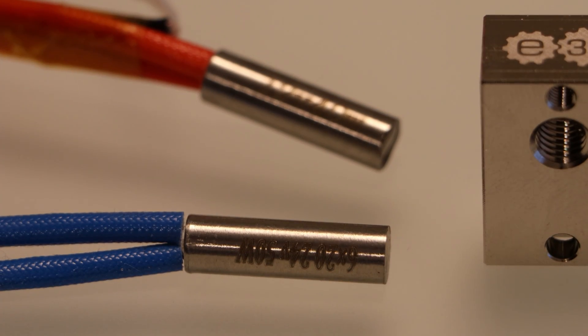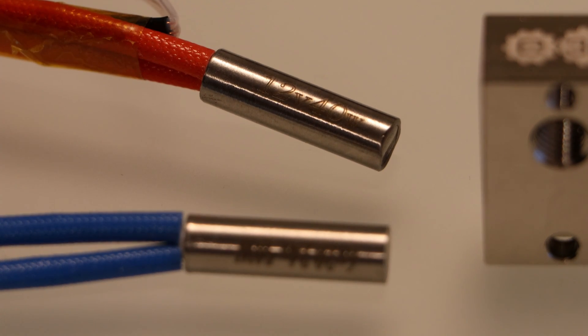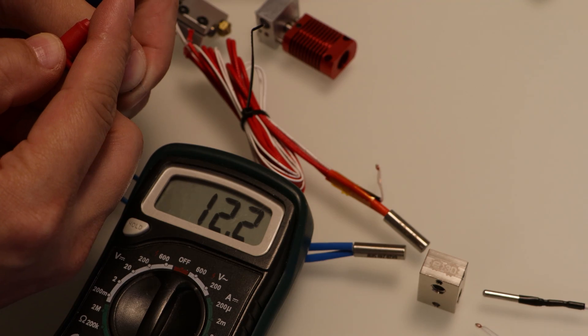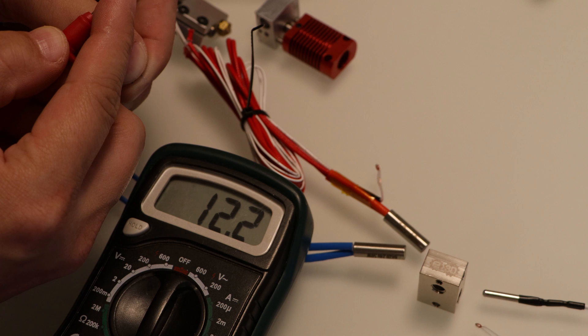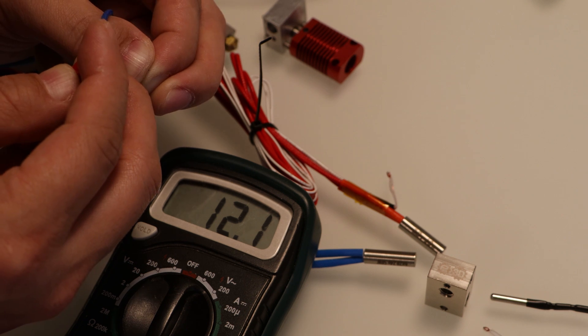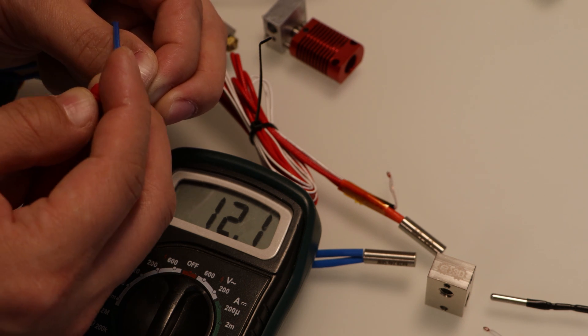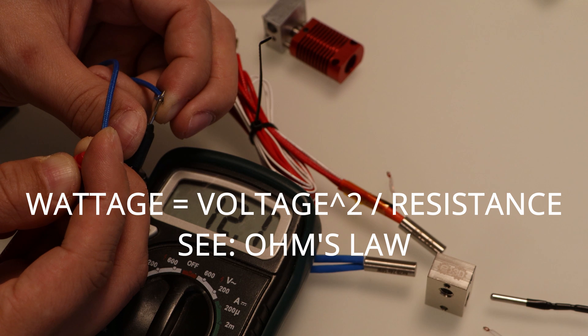Heater cartridges are usually described by a voltage rating and a power rating. These ones are nicely marked, so it's easy to tell what they are. But if they're unmarked, you can always just plug them into a multimeter. If you measure its resistance, you can calculate what its wattage is based on your system voltage and the resistance value of the heating element.